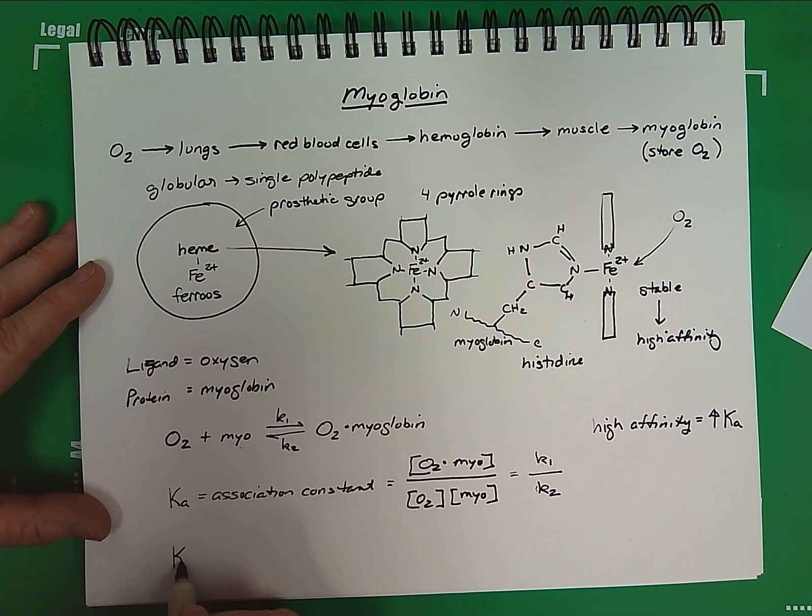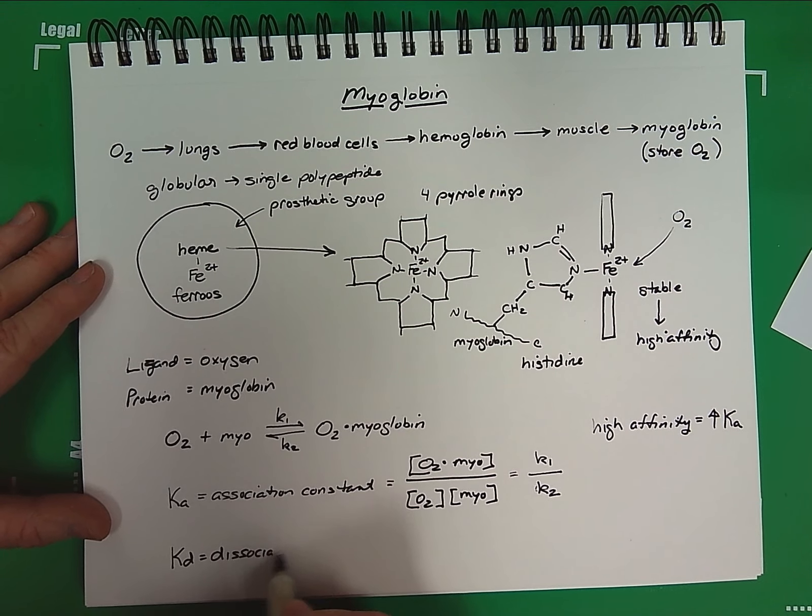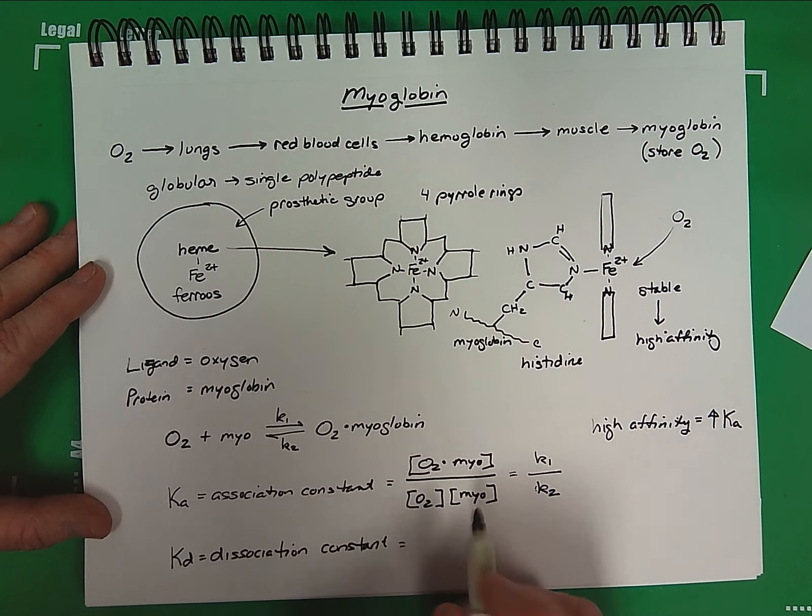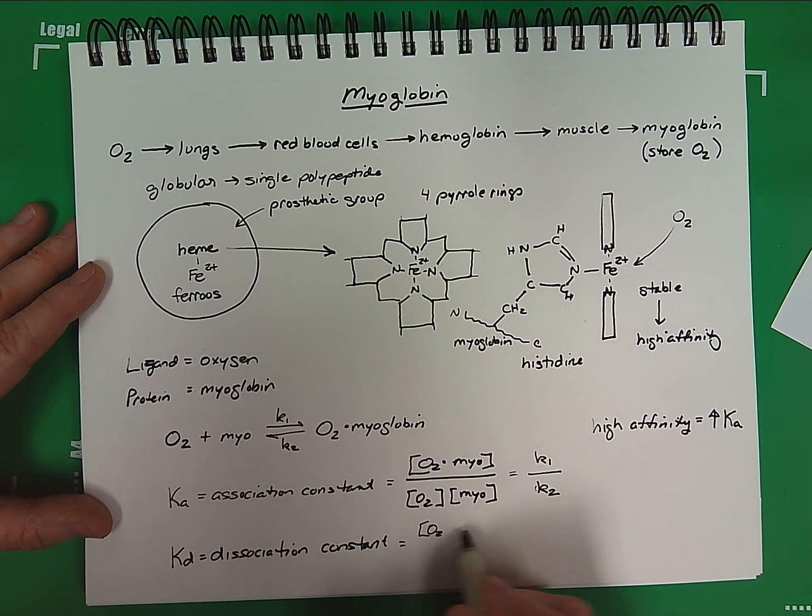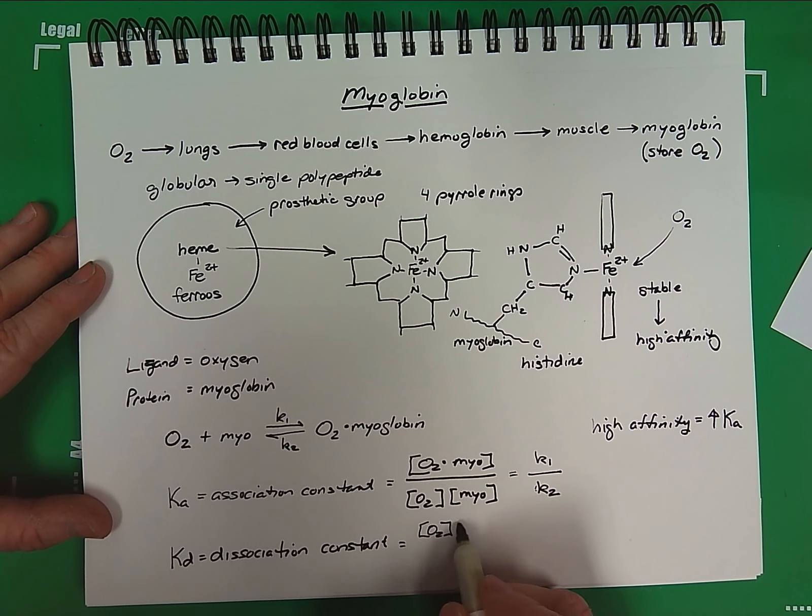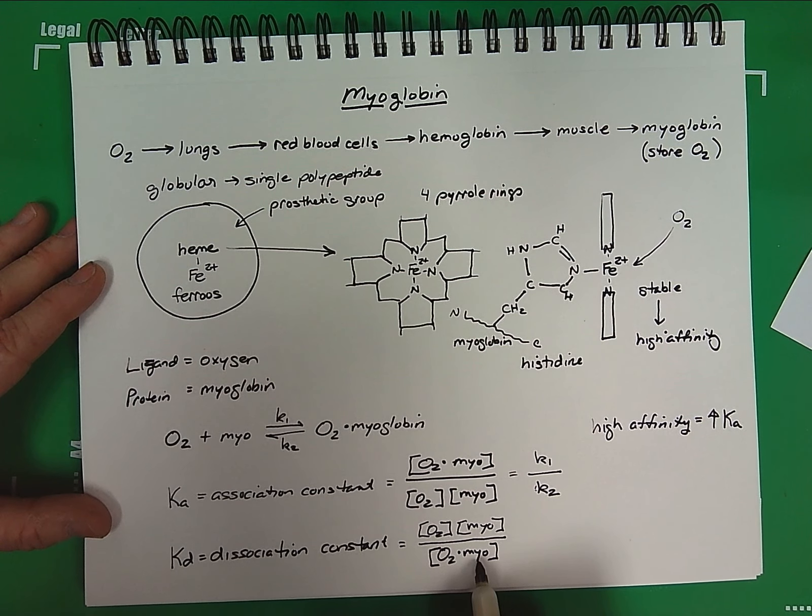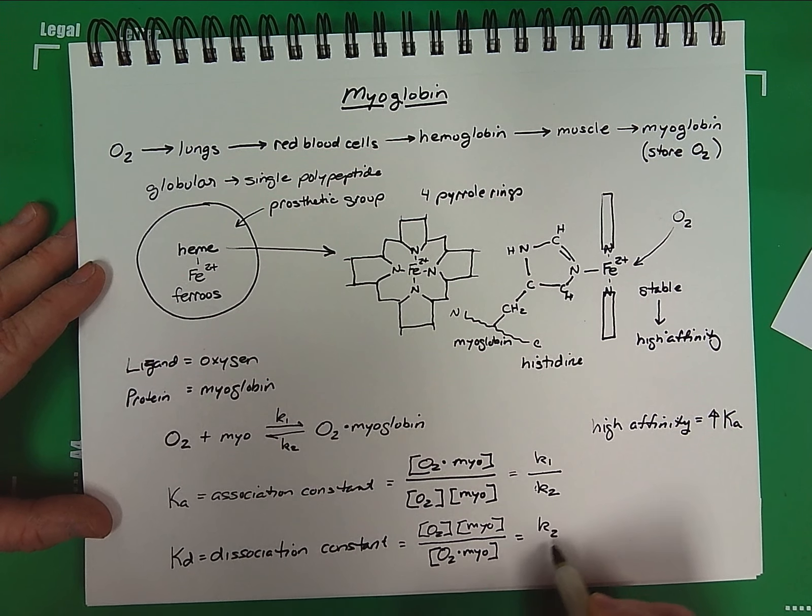Now, if we look at this in terms of Kd, which recall is our dissociation constant. The dissociation constant, of course, is the reverse reaction. So this is the concentration of our products of the reverse reaction, which is free oxygen and unbound myoglobin, over the concentration of our complex, our myoglobin-oxygen bound complex. If we look at the rate kinetics, this is the dissociation rate over the association rate.